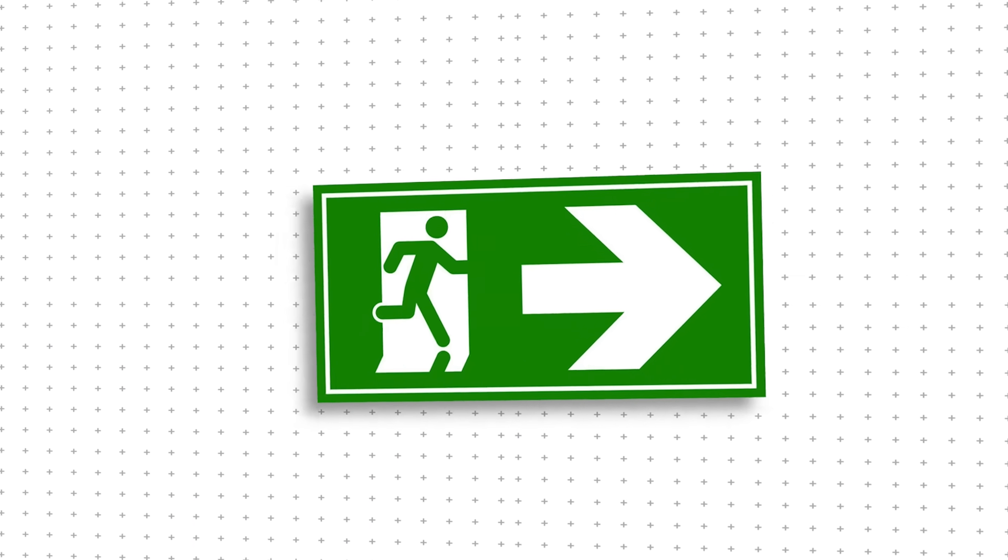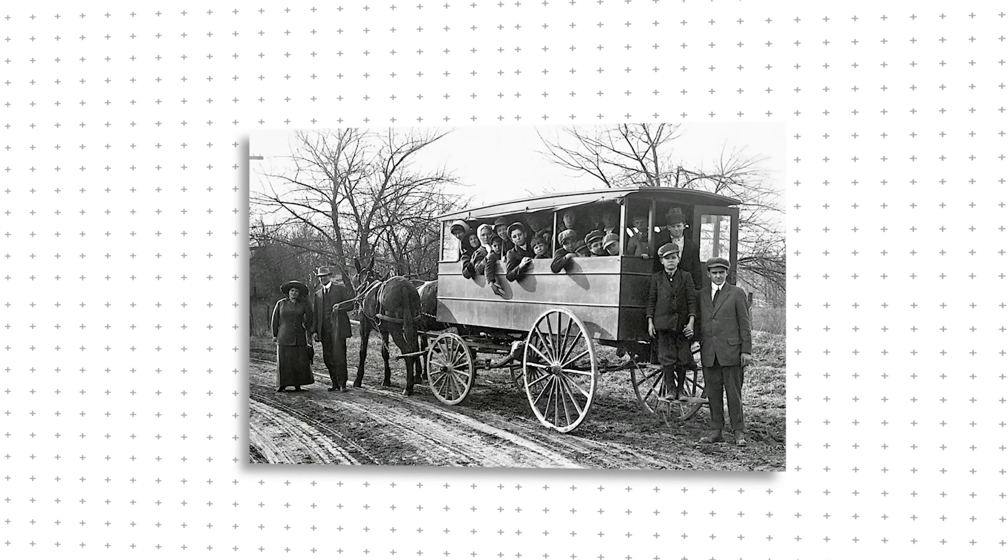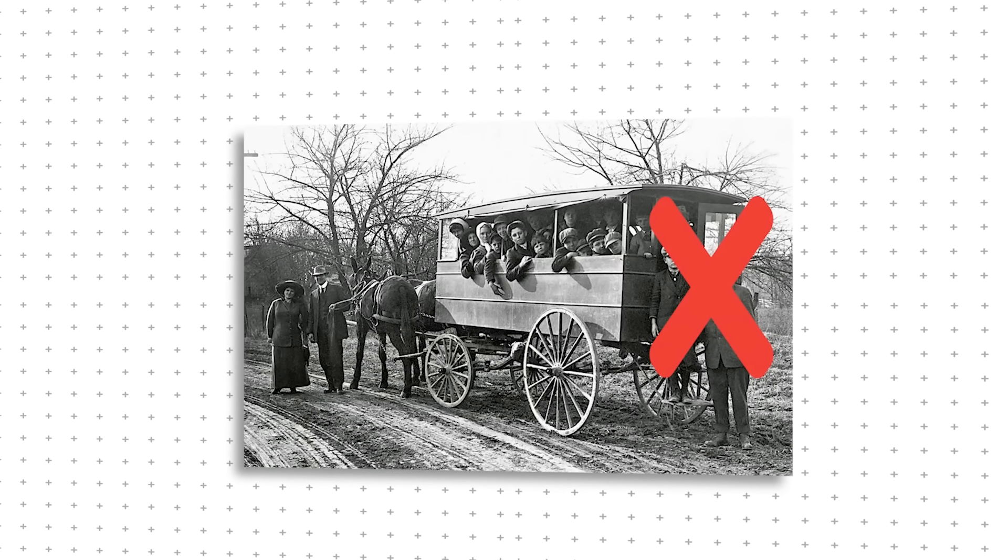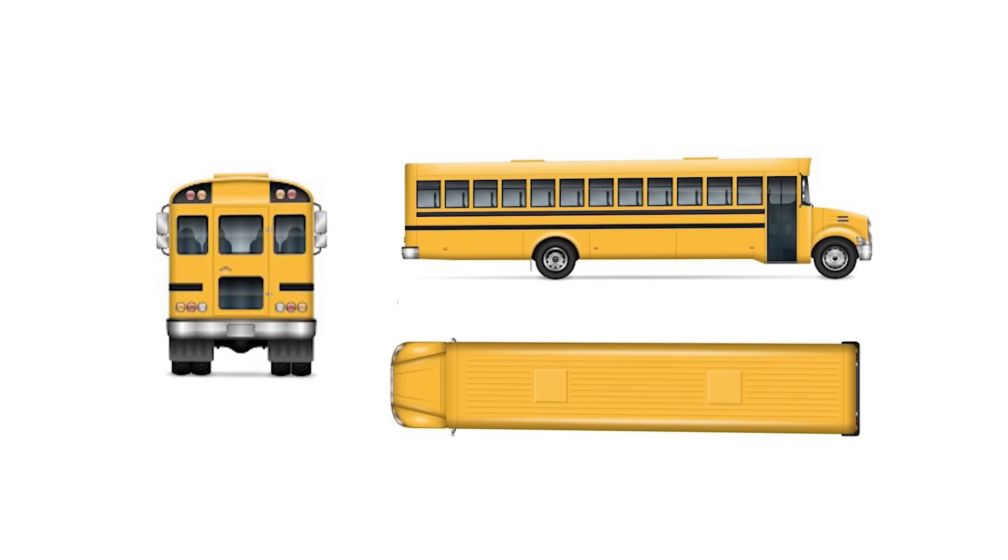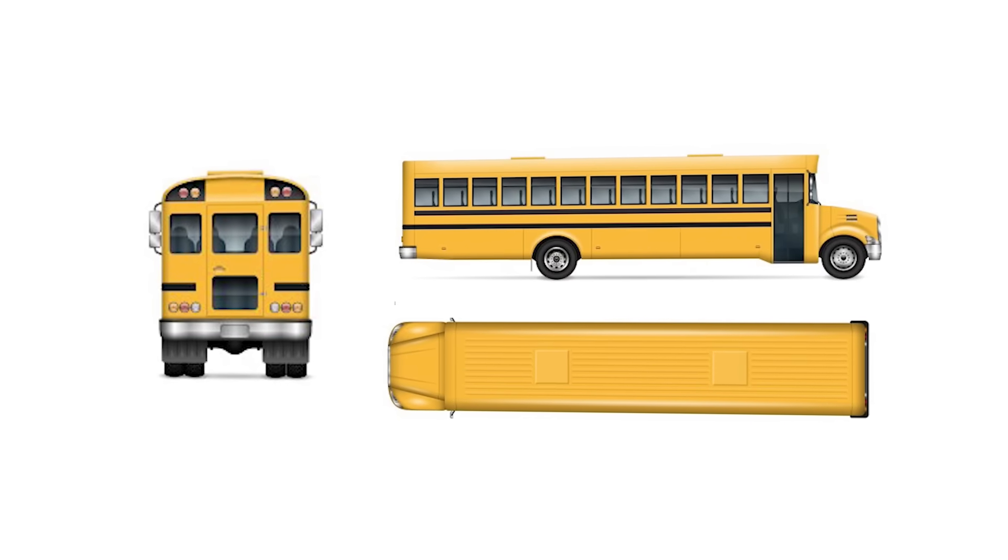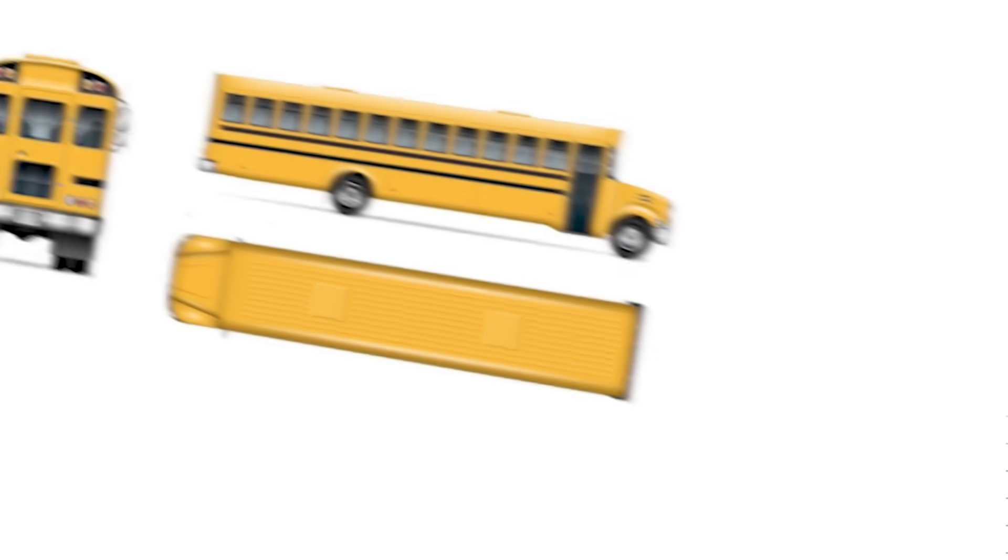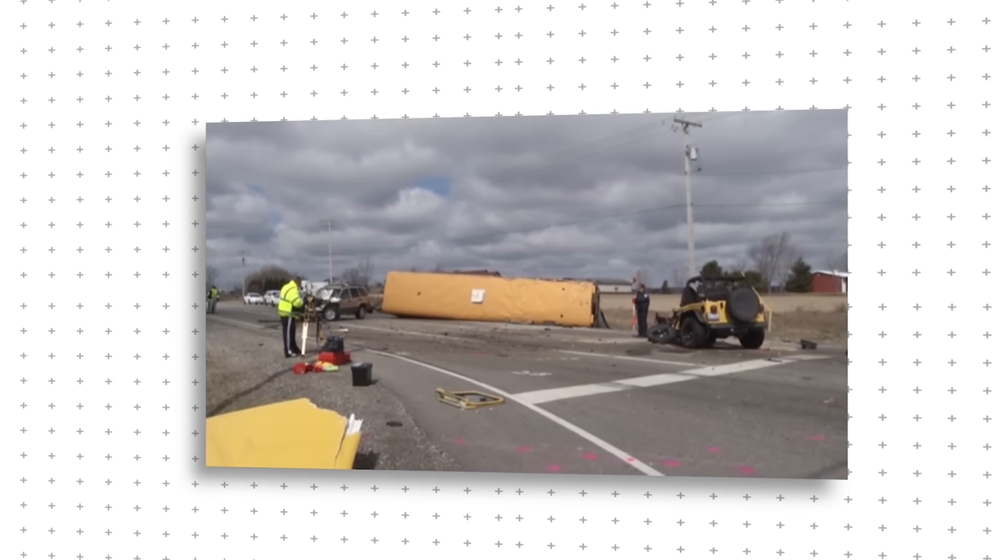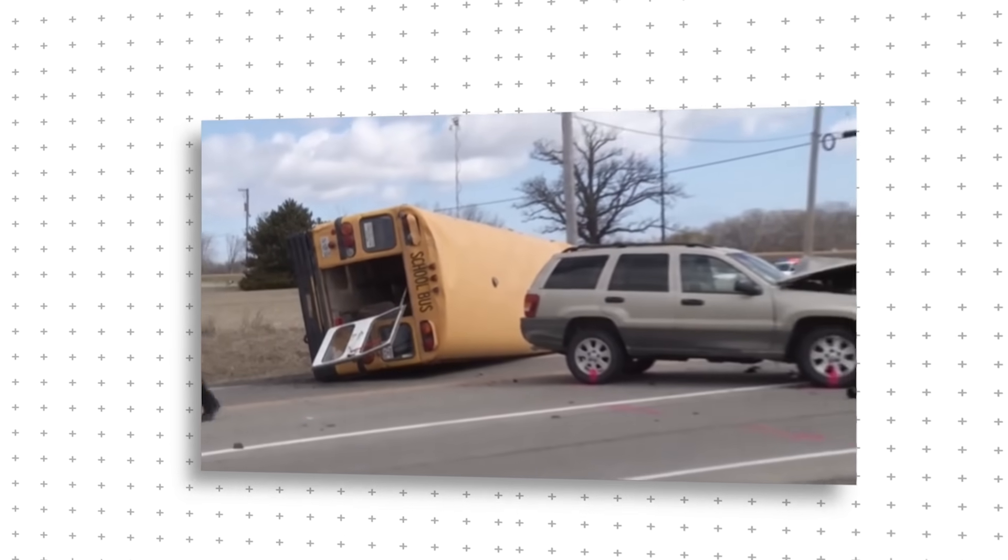Beyond impact protection, engineers also had to rethink emergency exits. Early school buses had only one door at the rear, meaning that if that exit was blocked, passengers had no way out. Today's school buses feature multiple escape routes, side emergency doors, roof hatches, and push-out windows. If the bus flips onto its side or catches fire, students will have several ways to evacuate.